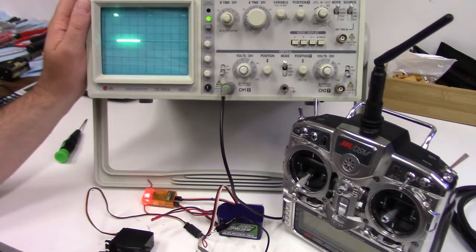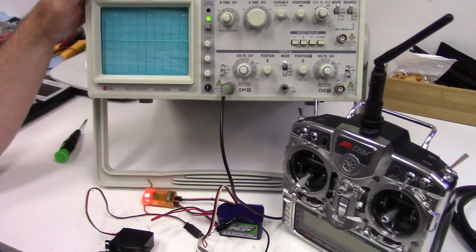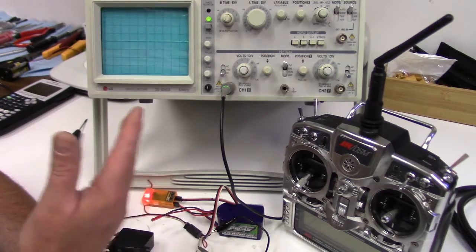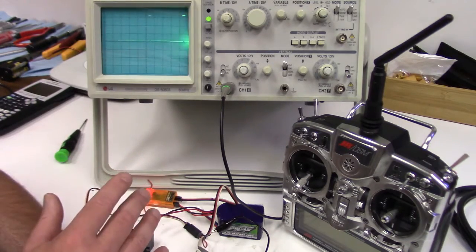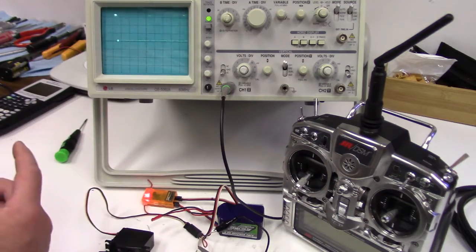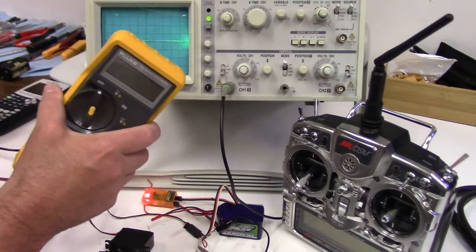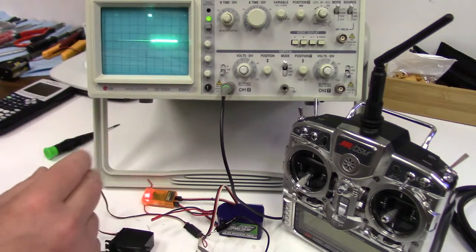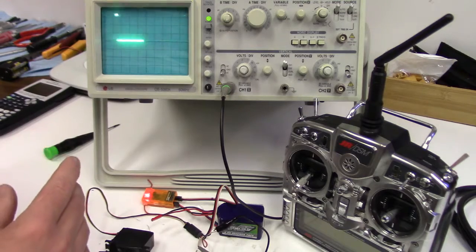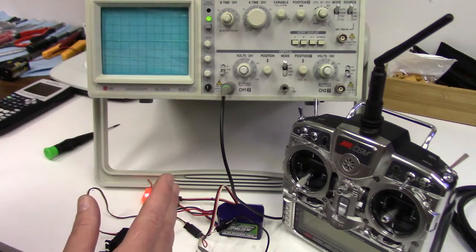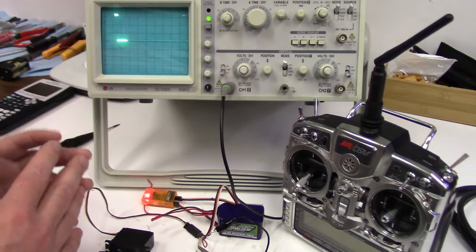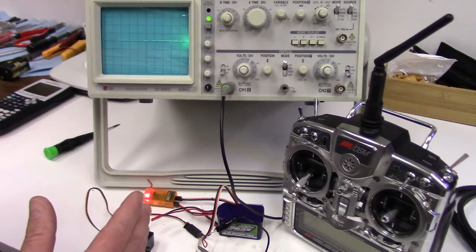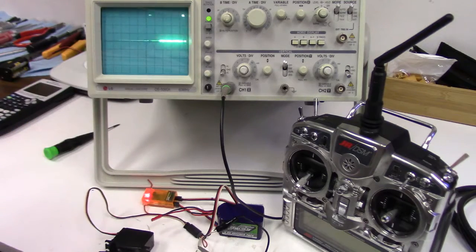To show all this we're just using a standard old analog oscilloscope. For those who don't really know what an oscilloscope is or what it does, basically it measures voltage changes over time. Unlike a voltmeter which just measures voltage, this will measure any changes in that voltage. A voltmeter won't show that unless the changes are really slow, but modern day electronics can have tens, hundreds, thousands, even millions of voltage changes per second. That's what this is going to show us.